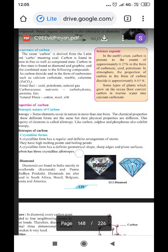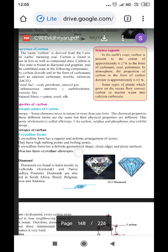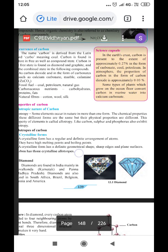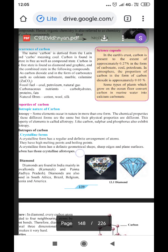In the earth's crust, carbon is present to the extent of approximately 0.27% in the form of carbon dioxide, carbonate, coal, and petroleum.